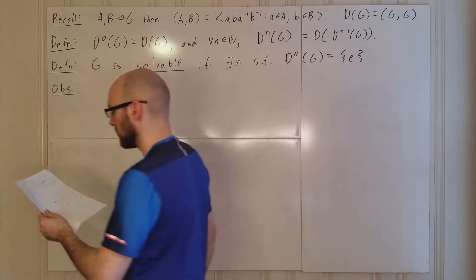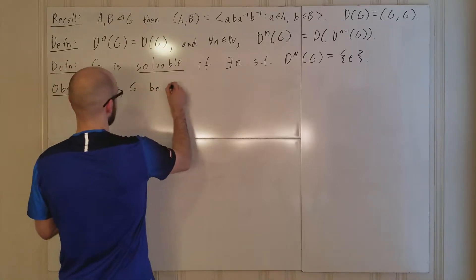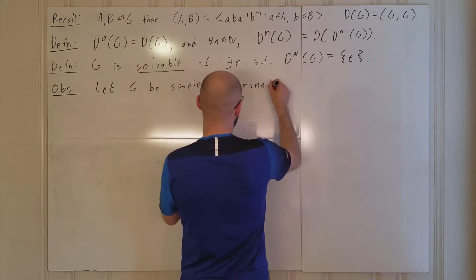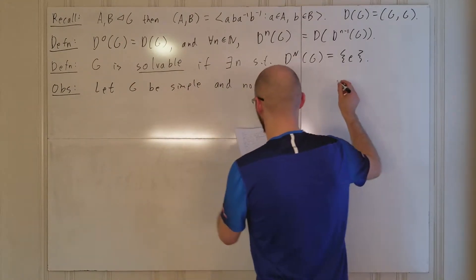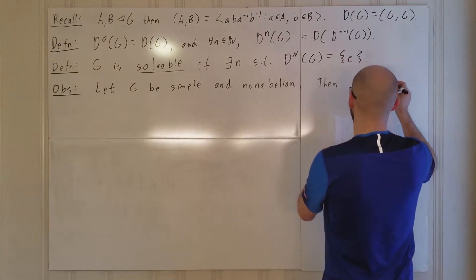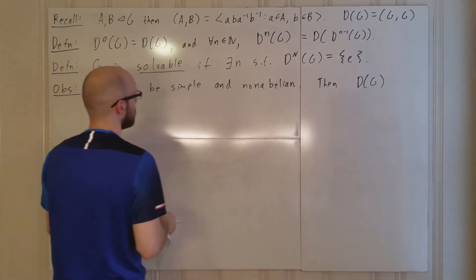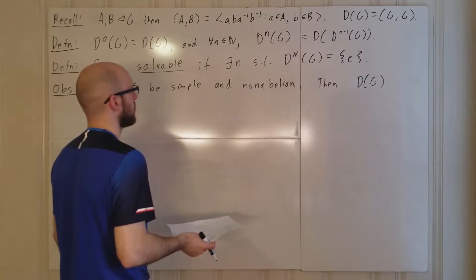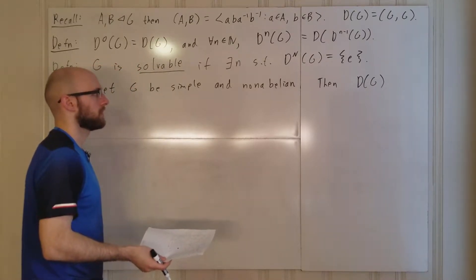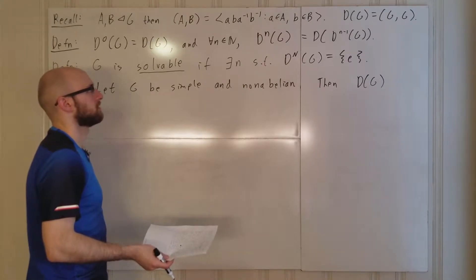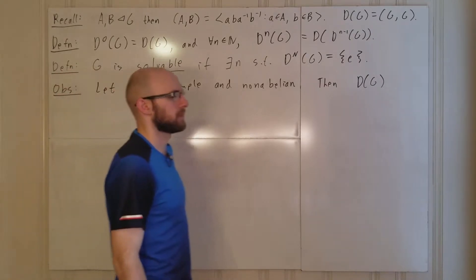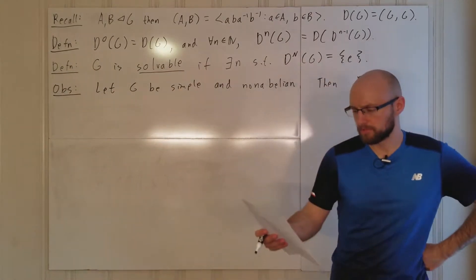Let G be simple and non-abelian. What is D(G)? Well, it's a normal subgroup of G, and G is simple, so it's either all of G or trivial. If the commutator subgroup is trivial, that's impossible because of non-abelianity.